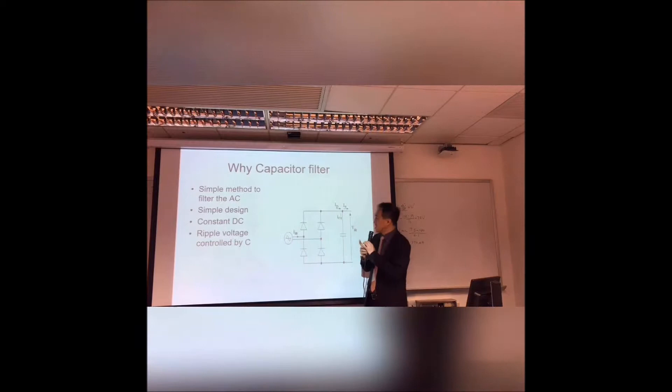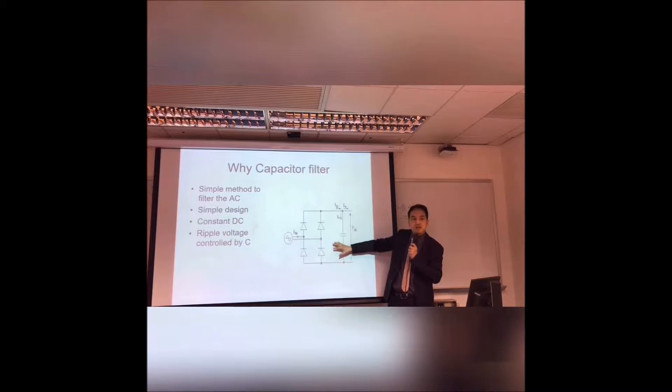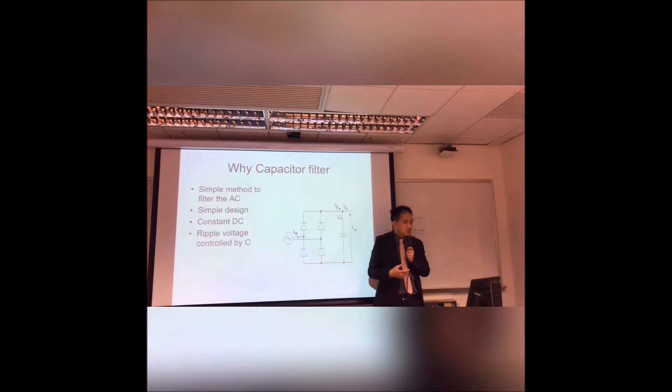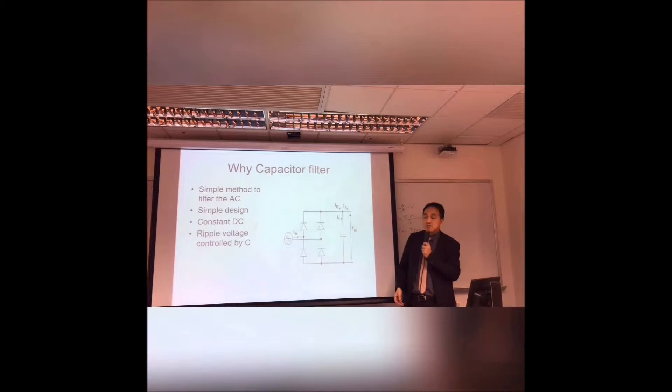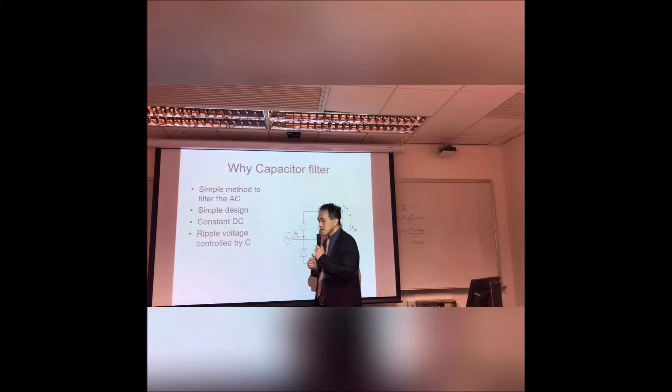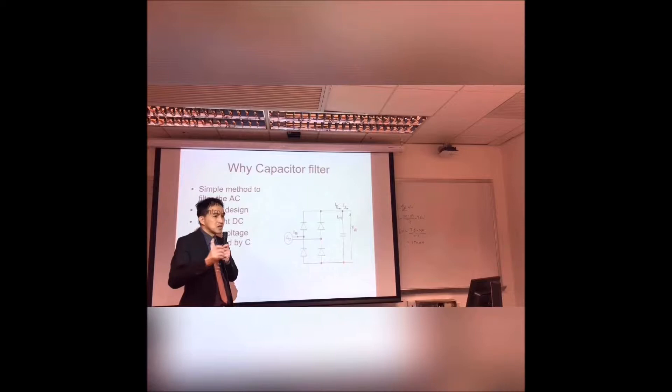AC input goes through a bridge rectifier. The most simple AC to DC rectifier is just putting on a capacitor — you all learn from it. When using this, many students like to make this capacitor very large in order to reduce the voltage ripple. So the larger the better — of course that will cost you more. But the question is: what is the limit? How much can you do? You could put it so large to reduce ripple to zero, but there will be some drawbacks.